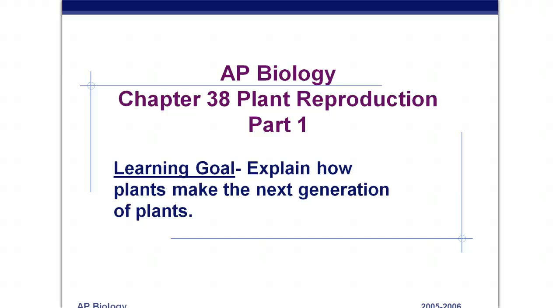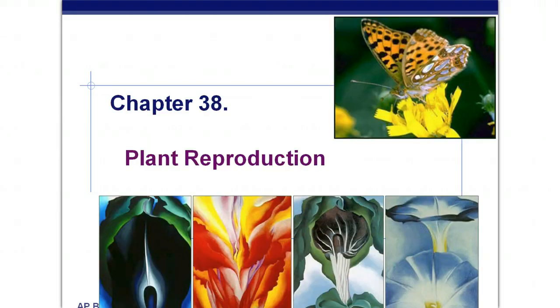AP Biology, Chapter 38, Plant Reproduction, Part 1. Today we're going to learn about how plants reproduce themselves. Remember that flowering plants are angiosperms, and they're the most successful plants on land.